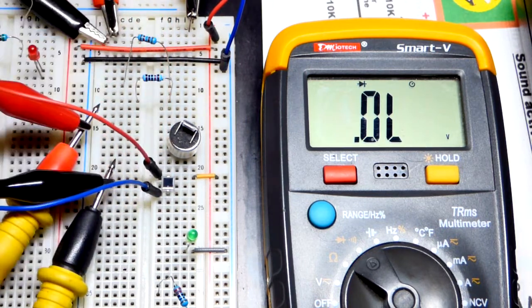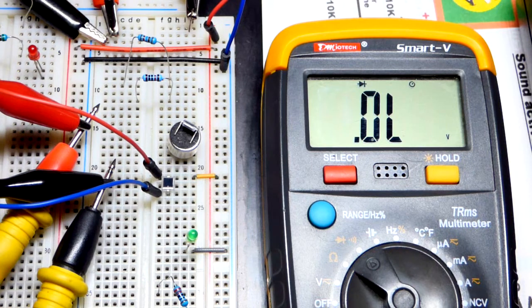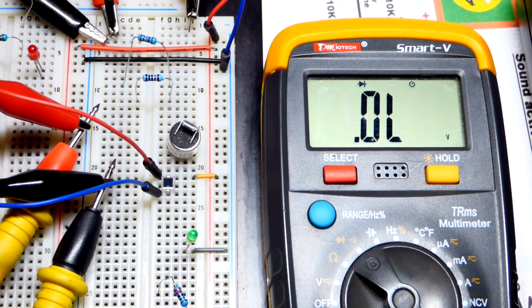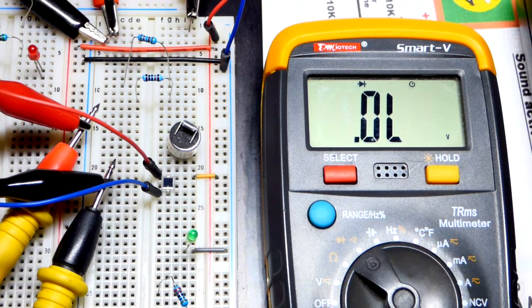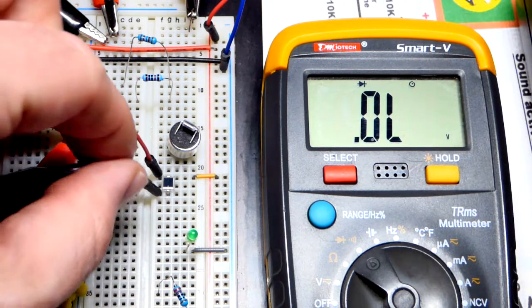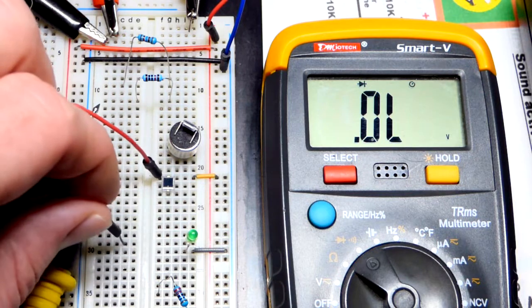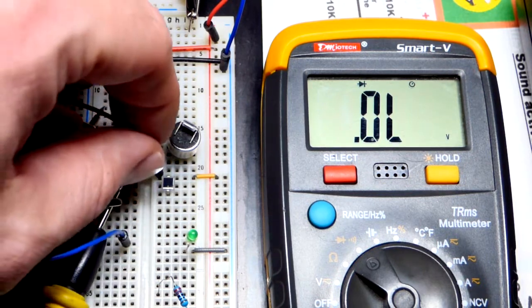So now we're flipping it. Now we have it reverse biased. It blocks a lot more voltage, more than the meter is applying to it. So there's no current going and so we're not getting anything. It's just like right now, there's no current flowing because there's no connection. So it was an open circuit.